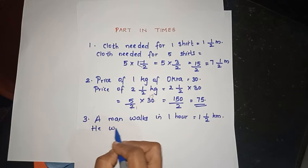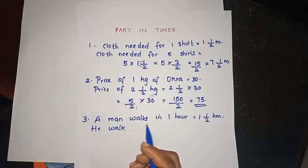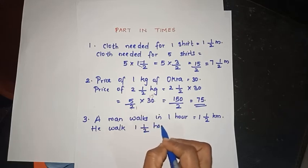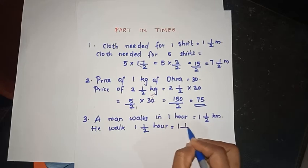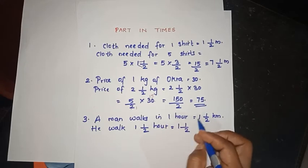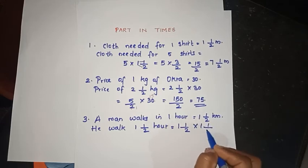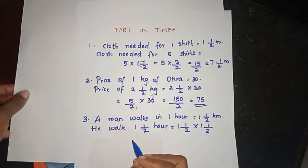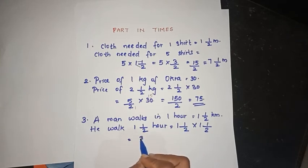If he walks 1 and a half kilometers in one hour at this speed, we calculate 1 and a half into 1 and a half. That is 3 by 2 into 3 by 2, which gives 9 by 4.